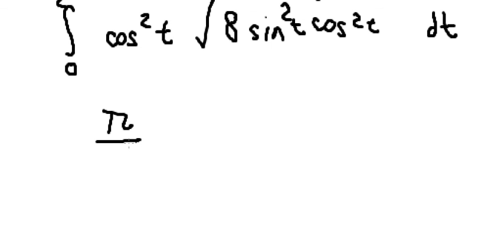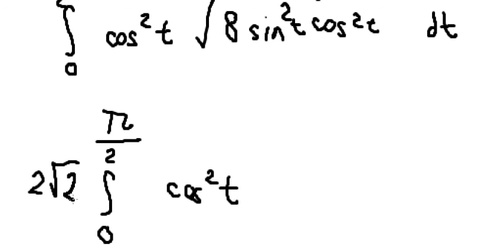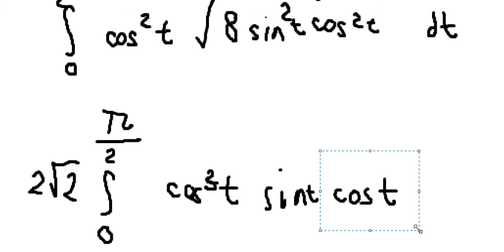So we got about cos²t the square root of number 8, you got about 2 multiplied with the square root of number 2 sin t cos t. This one cos t with cos²t you got about cos t to the power of 3 DT.